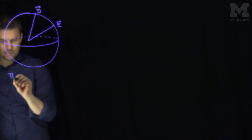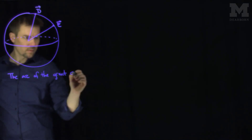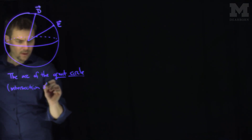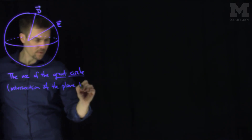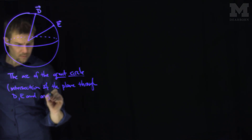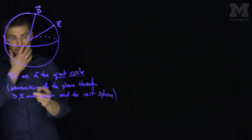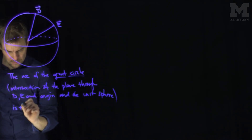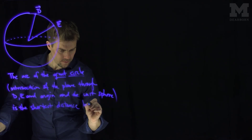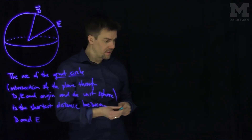The arc of the great circle, where the great circle is the intersection of the plane through D, E, and the origin, with the sphere. So the arc of that great circle is the shortest distance between D and E.